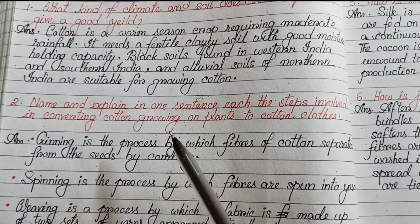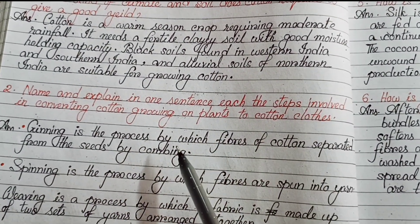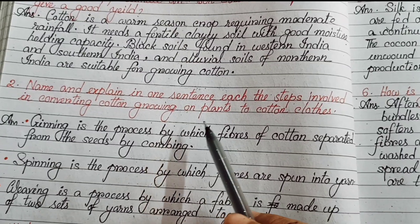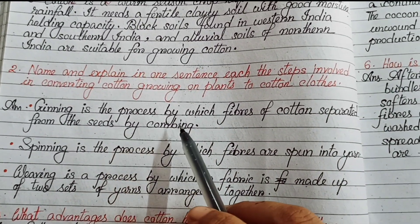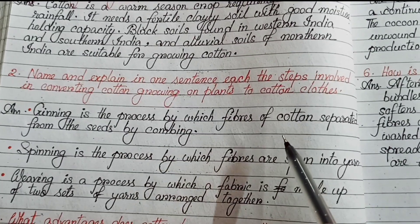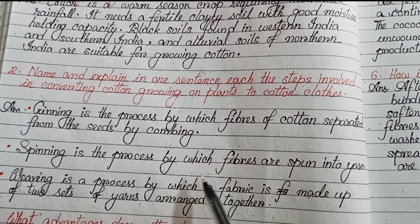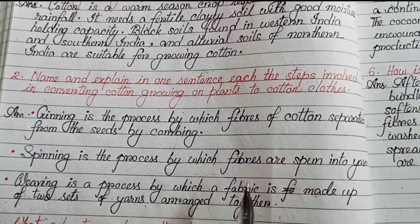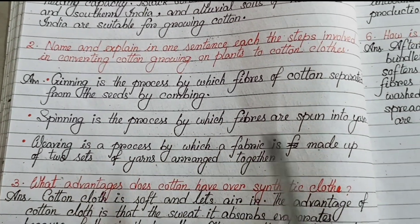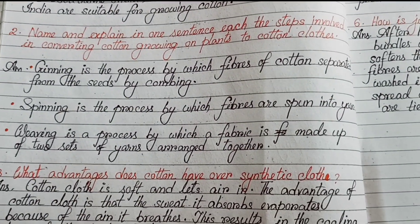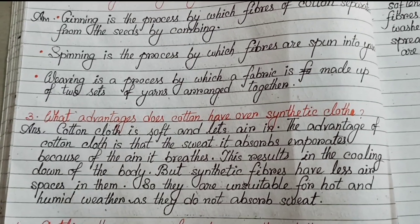Number 2: name and explain in one sentence each the steps involved in converting cotton growing on plants to cotton clothes. Ginning is the process by which fibers of cotton are separated from the seeds by combing. Spinning is the process by which fibers are spun into yarn. Weaving is the process by which fabric is made up of two sets of yarns arranged together.